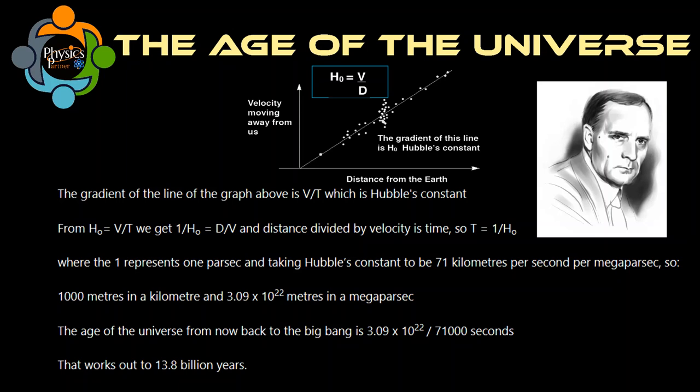By taking the reciprocal, or 1 over H₀, the units will become seconds. Therefore, the reciprocal of the gradient represents time and gives the amount of time which the universe has been expanding for. Astronomers have used this formula to estimate the age of the universe, which is about 13.7 billion years.